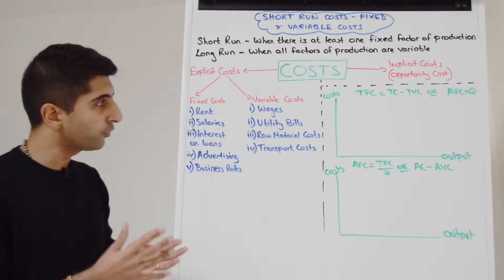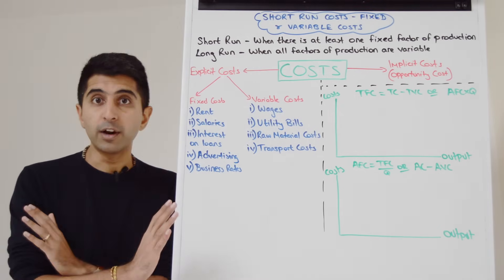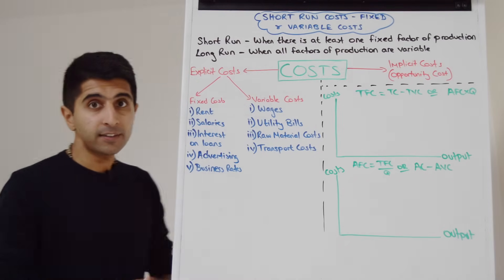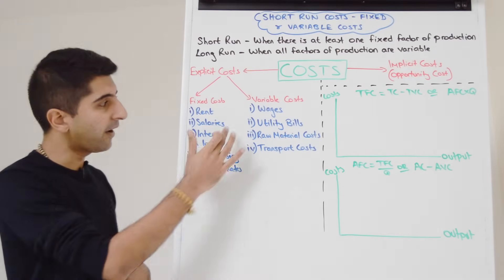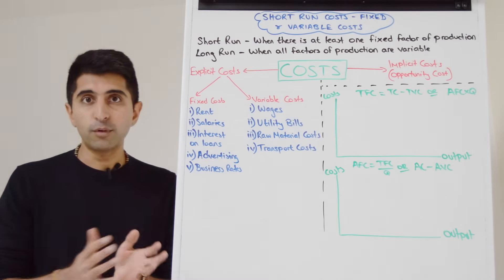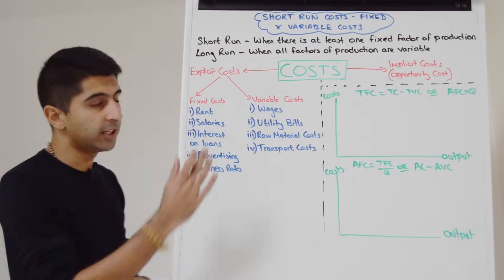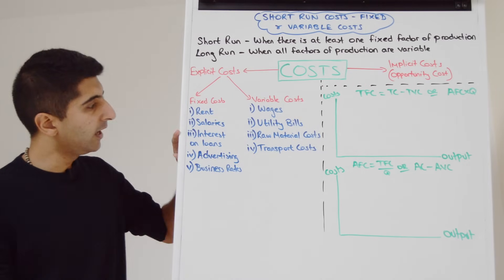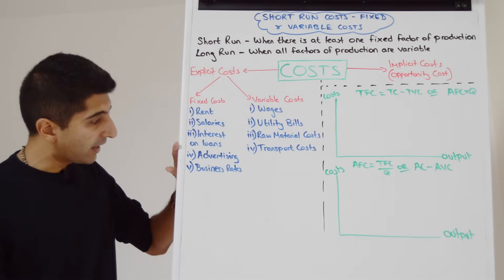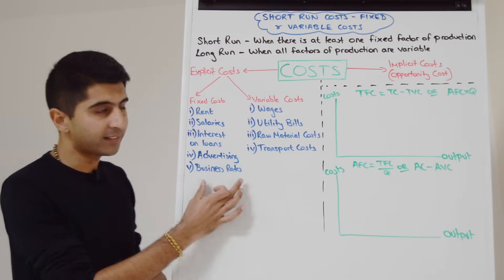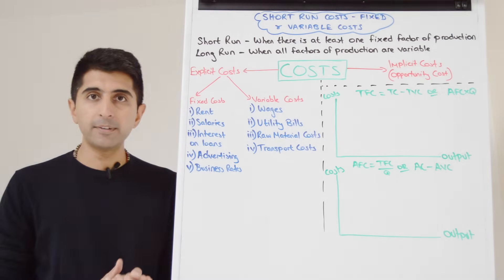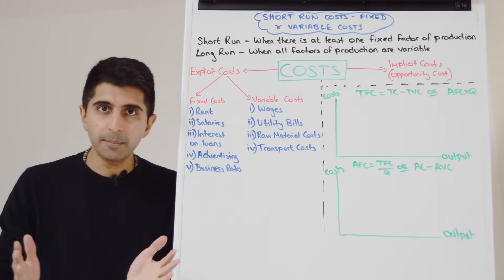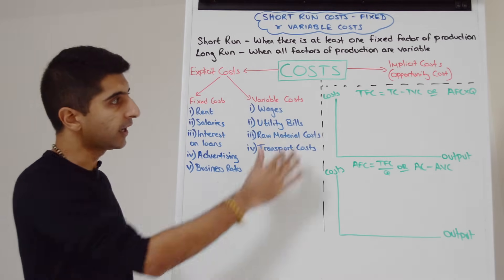Let's take some examples of fixed costs — costs you have to pay regardless of how much output you're producing. Things like rent, salaries (salaries are contractual, so you have to pay those regardless of how much you're producing, usually on a yearly contract), interest on loans, advertising, and business rates (taxes on having a physical premises). These are all costs you have to pay regardless of how much output you're producing.